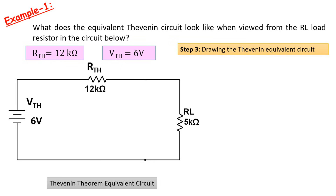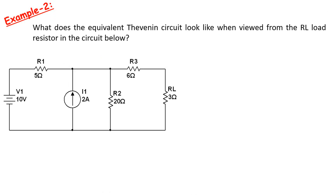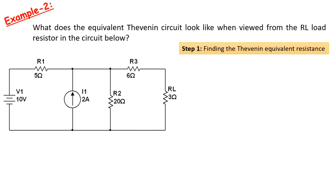Let's do one more example for better understanding. Again, in this example, let's try to find out what the Thevenin equivalent circuit looks like when viewed from the RL load resistance. Again, the first step is to find the Thevenin equivalent resistance. For this, we first need to remove the RL load resistor from the circuit. Now we can look at the circuit between these two points.